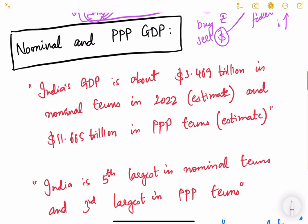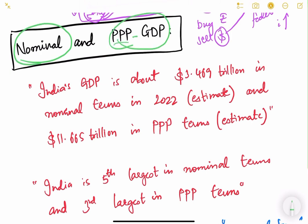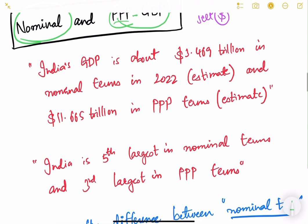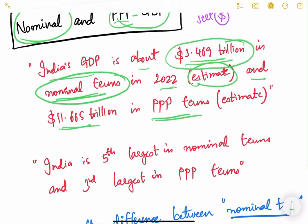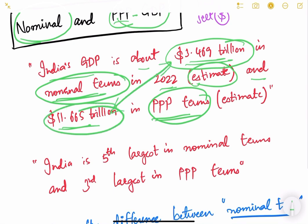Now let us look at another concept: nominal GDP versus PPP (Purchasing Power Parity) GDP. India's estimated 2022 GDP is about $3.469 trillion in nominal terms and $11.665 trillion in PPP terms. So why is there such a large difference, and what do these two terms mean?